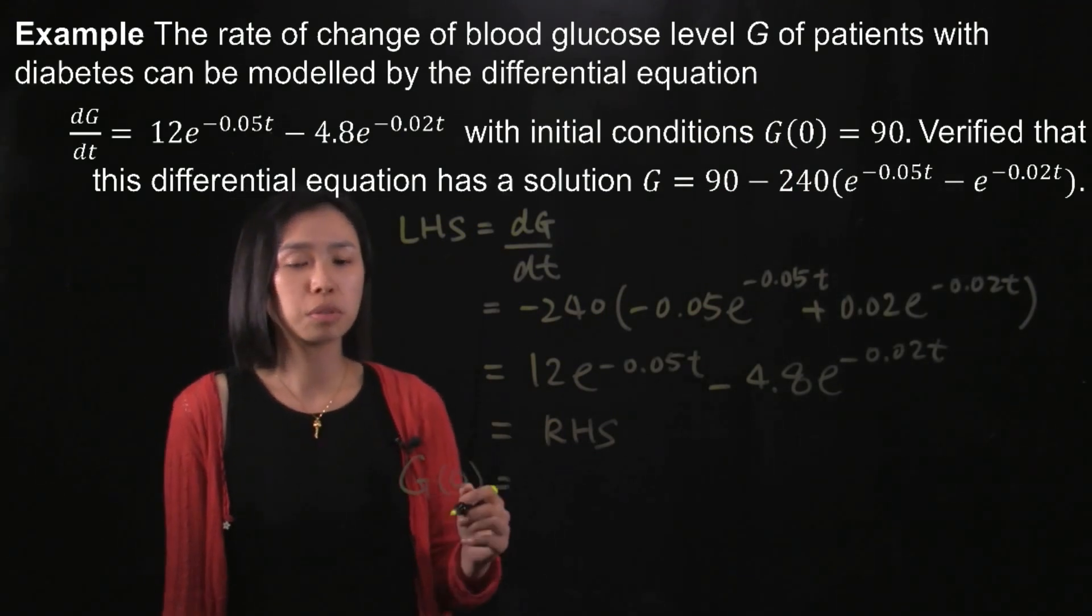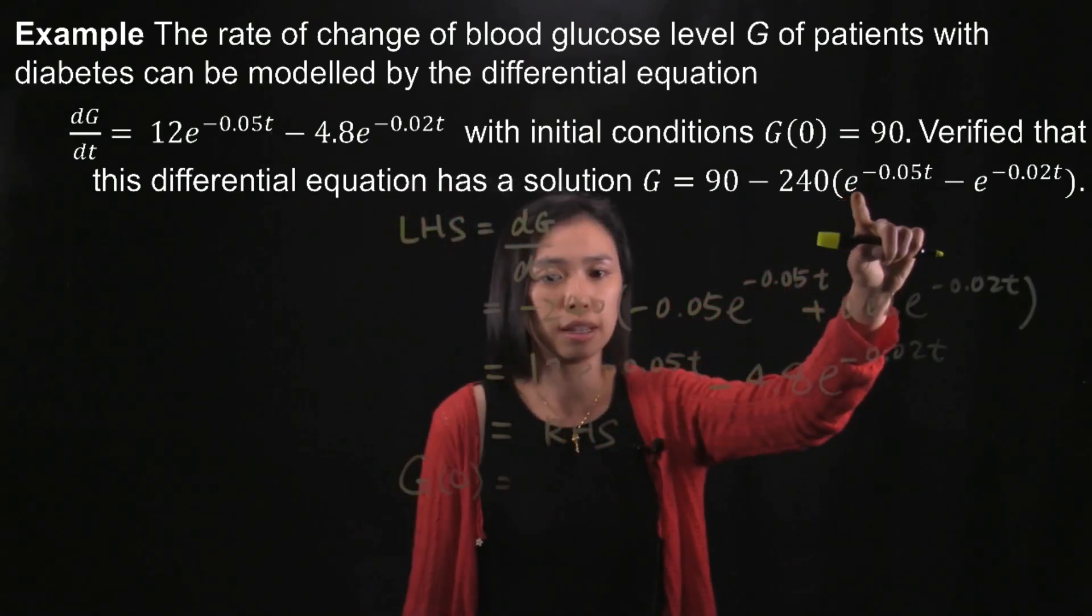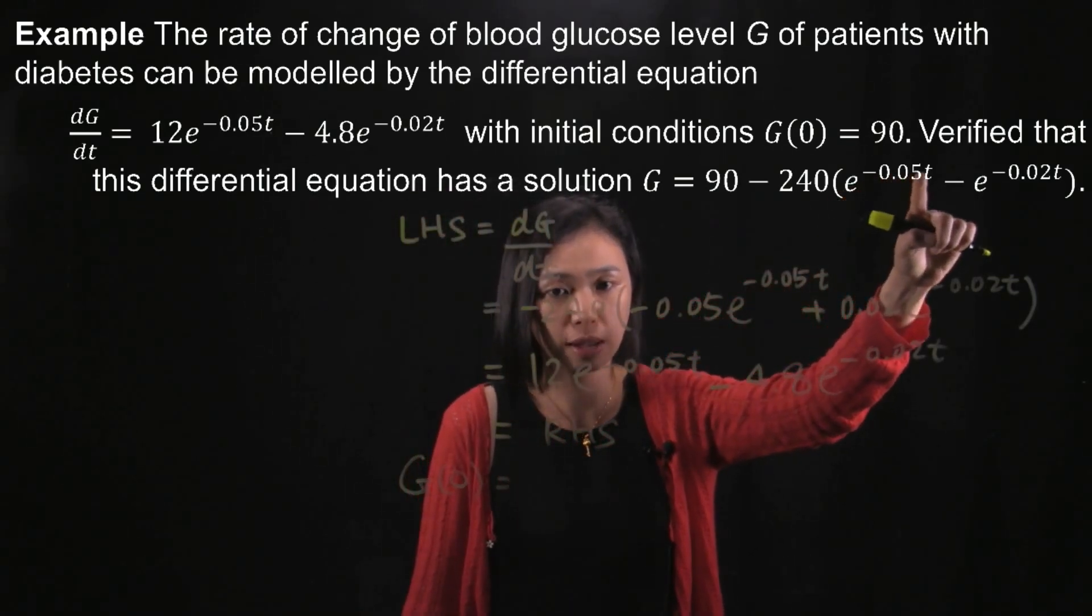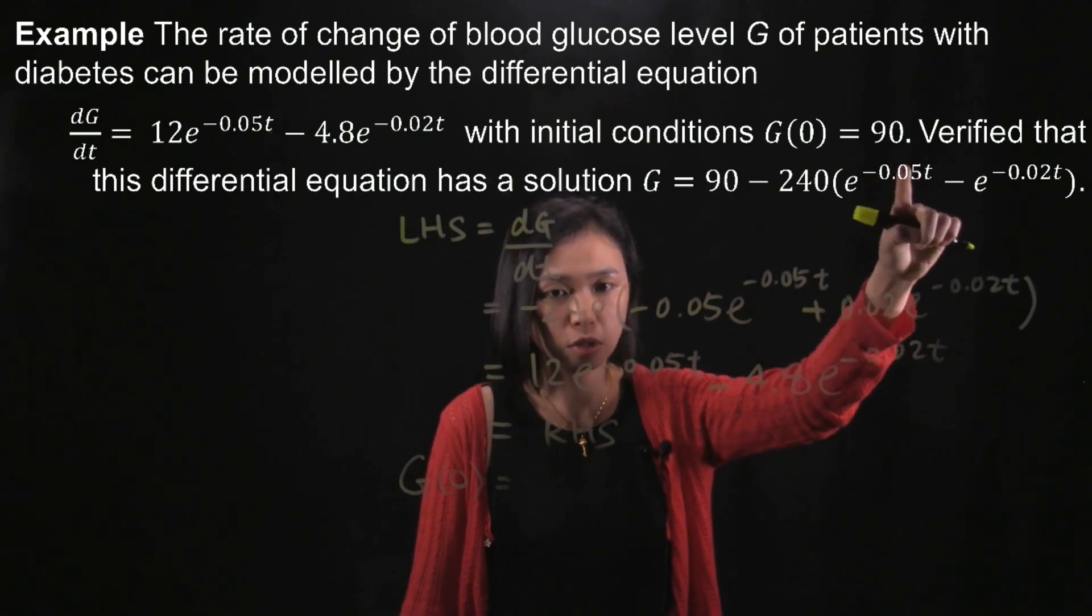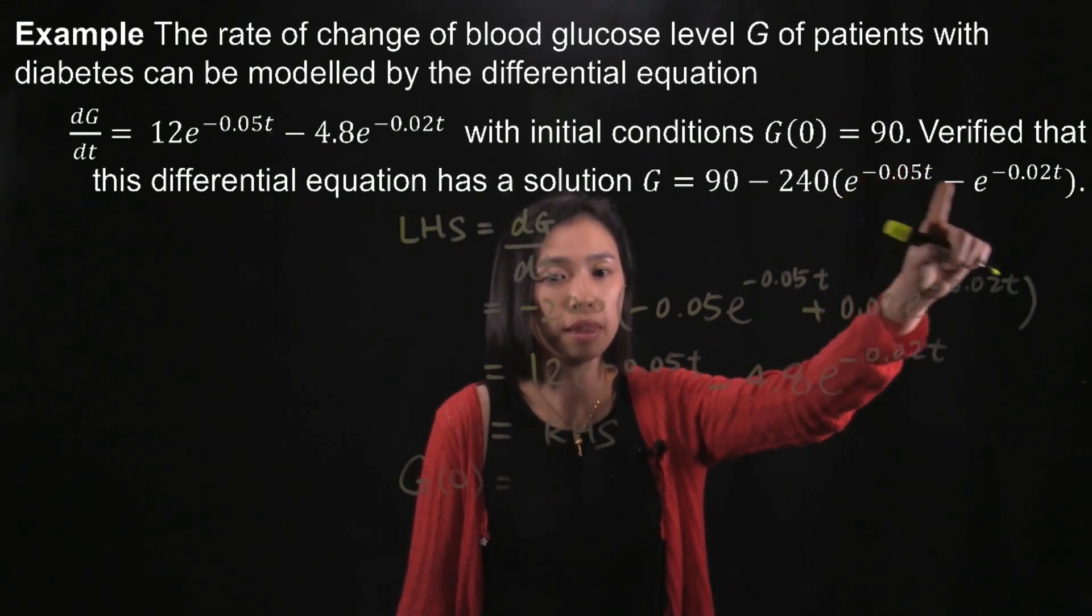So we substitute 0 for t in this expression. We would have e to the power of negative 0.05 times 0, which is e to the power of 0. And e to the power of 0, you'll get 1. So 1 minus 1...